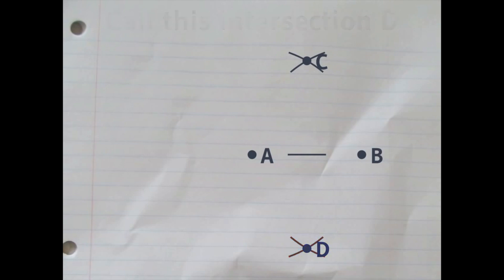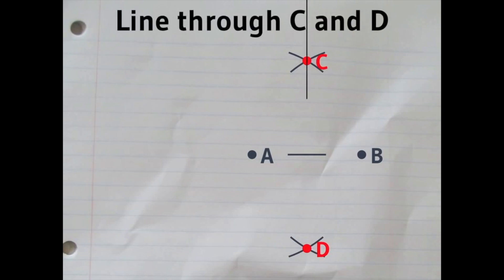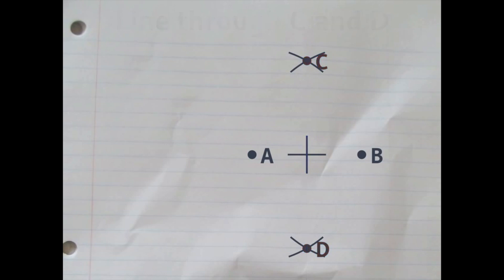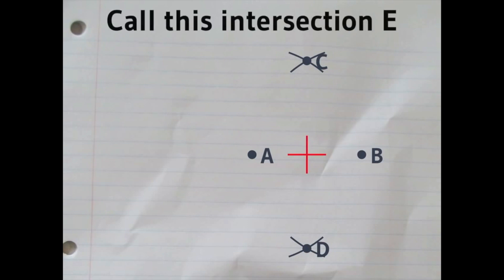Next, you take up your ruler again and draw a line through C and D. You can see that neatly cuts the first line that we drew. So that gives us a brand new intersection point. We'll call that E.